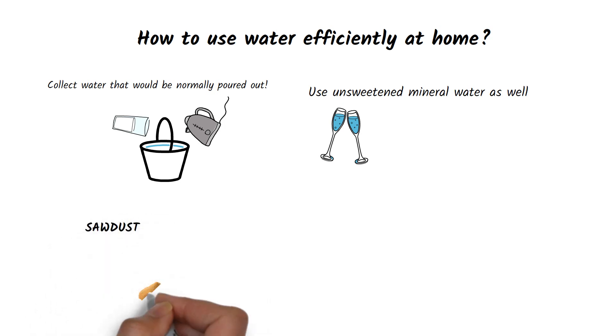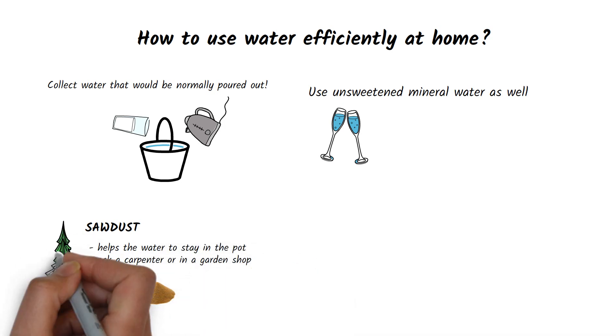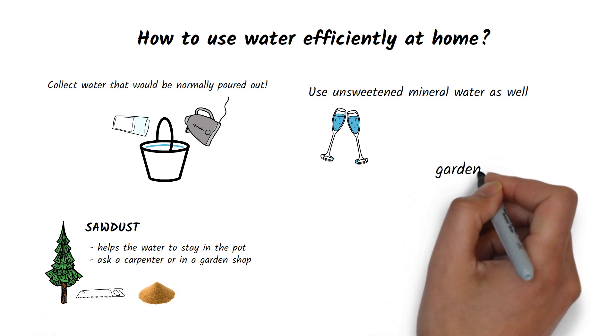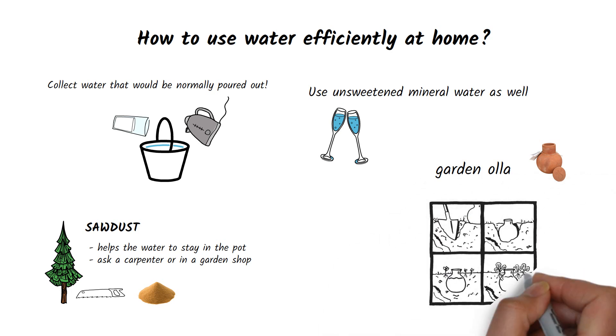Adding sawdust to your plants will encourage the water to stay in the pot longer. It is easy to get from carpenters, garden shops or Christmas tree sellers before the Christmas holidays. If you grow plants outside in the garden, a useful watering aid can be oil irrigation, an unglazed pot buried in the soil where it gradually releases water. The roots of the plants grow around the container and absorb water directly from its walls.